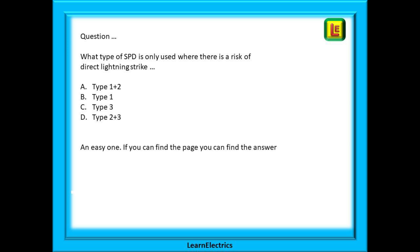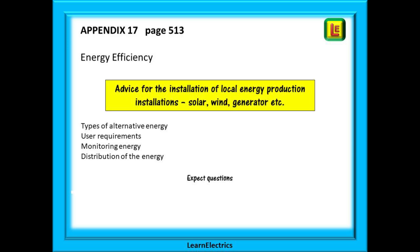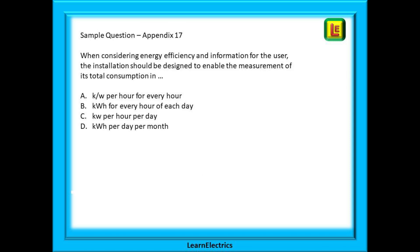And lastly, energy efficiency — appendix 17. An important section in today's green world, so do expect a question. Try this question on appendix 17: when considering energy efficiency and information for the user, the installation should be designed to enable the measurement of its total consumption in the same way — and there are four choices. The answer is there; your job is to find it and compare it to the four choices offered. Only one is correct.